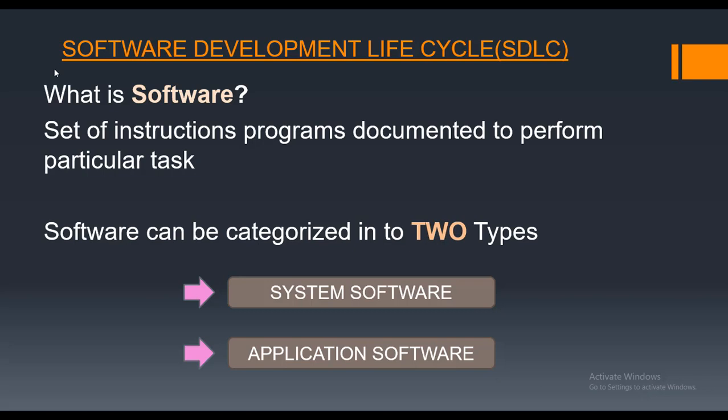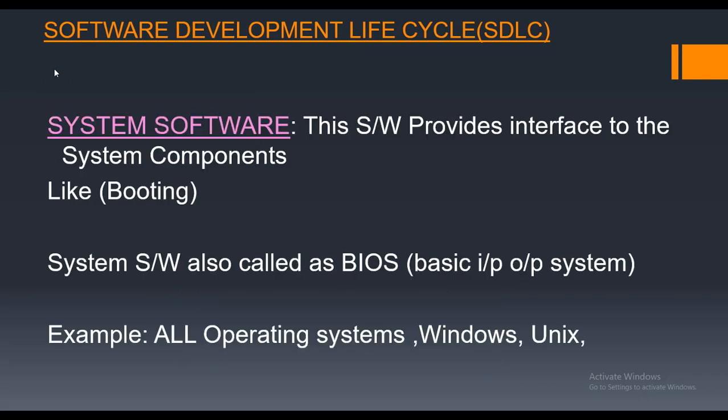As the name indicates, system software works for the system. System software performs system-level activities and programs. A simple example is the operating system — it is a system software. System software is software which works internally for the system and its hardware components.